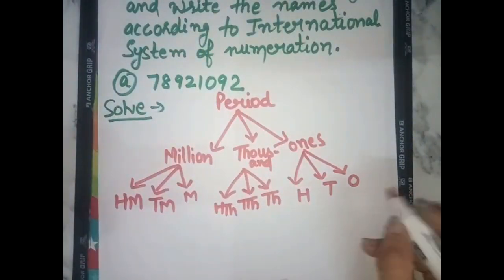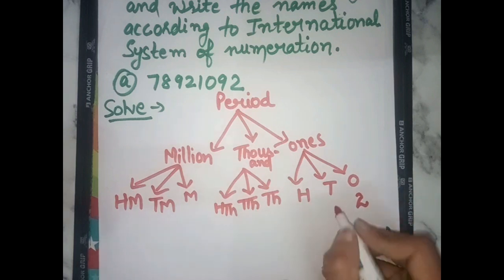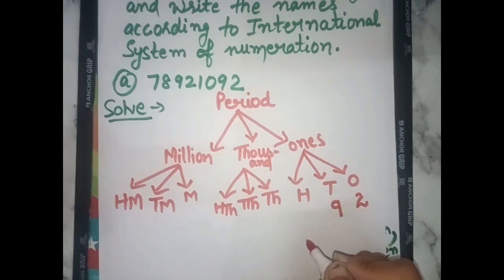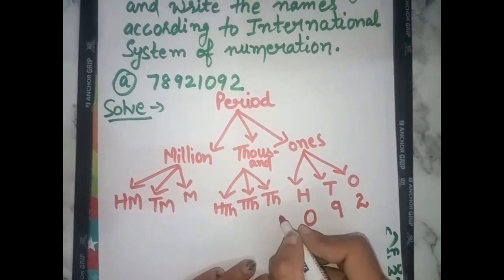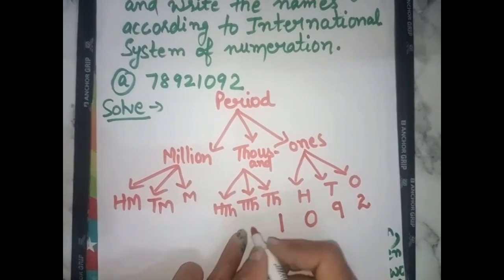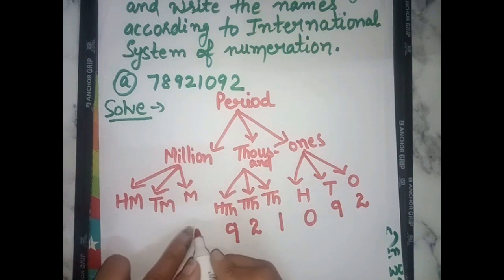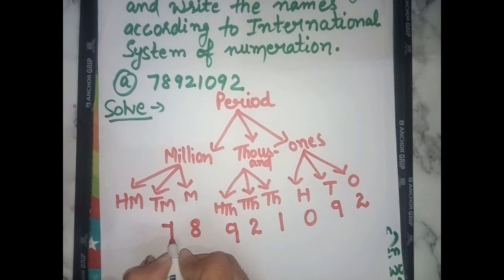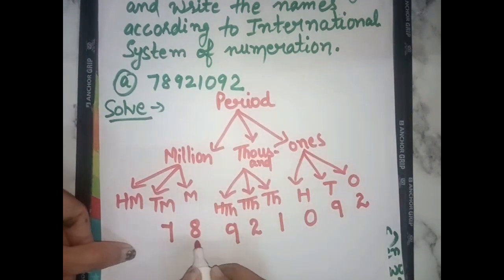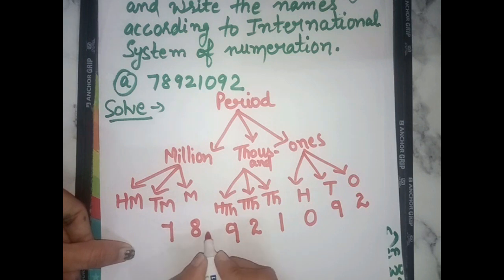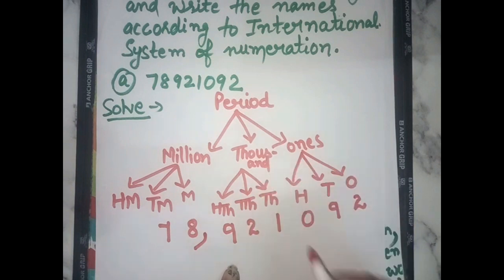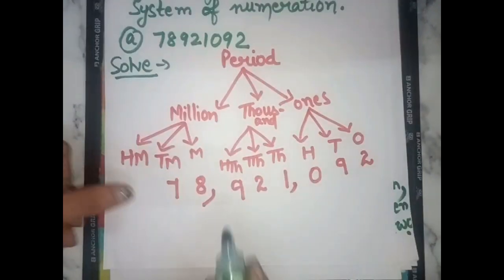Now, placing digits into the International system chart. Last digit 2 goes in ones; next in tens; then hundreds gets 0; thousands gets 1; ten thousands gets 2; hundred thousands gets 9. Then million gets 8, ten million gets 7. Period is separated — put comma: 9, 2, 1 in thousands period — put comma. Period is finished.